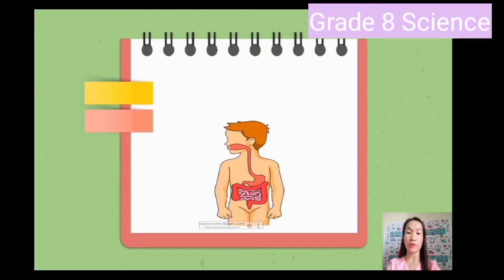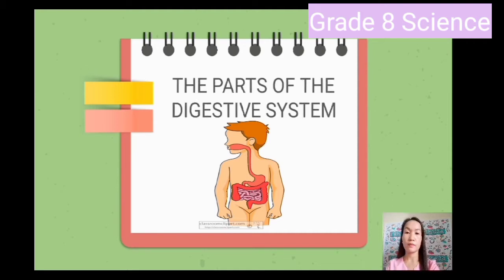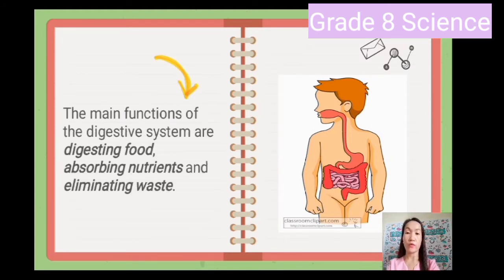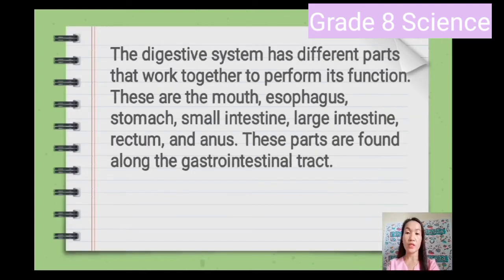The main functions of the digestive system are digesting food, absorbing nutrients, and eliminating waste. The digestive system has different parts that work together to perform its functions. These are the mouth, esophagus, stomach, small intestine, large intestine, rectum, and anus. These parts are found along the gastrointestinal tract, or the GI tract.